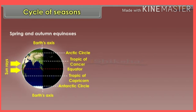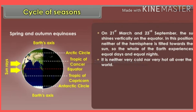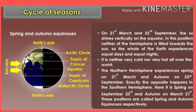Cycle of seasons: On 21st March and 23rd September, the sun shines vertically on the equator. In this position, neither hemisphere is tilted towards the sun, so the whole earth experiences equal days and equal nights. It is neither very cold nor very hot all over the world. The northern hemisphere experiences spring on 21st March and autumn on 23rd September, while exactly the opposite happens in the southern hemisphere — spring on September 23rd and autumn on March 21st. These positions are called spring and autumn equinoxes respectively.